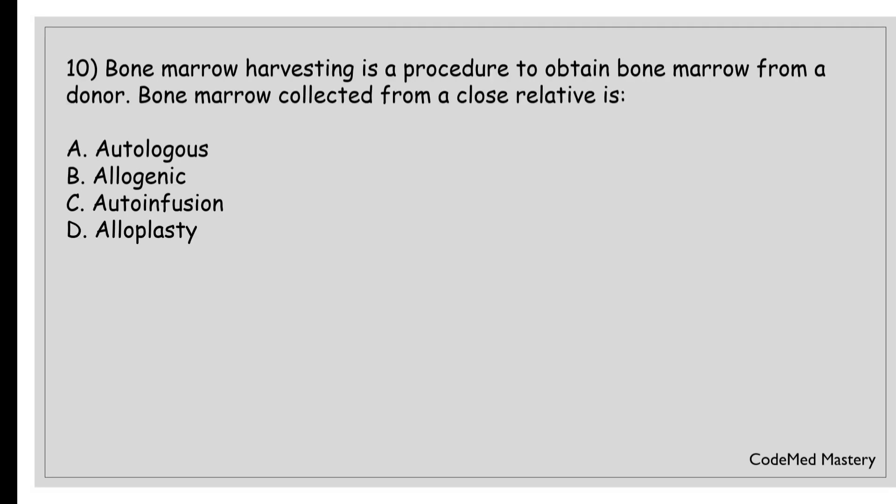Next question: bone marrow harvesting is a procedure to obtain bone marrow from a donor. Bone marrow collected from a close relative is: option A, autologous; option B, allogenic; option C, auto infusion; option D, alloplasty. The correct answer is option B, allogenic. Allogenic bone marrow transplantation involves collecting bone marrow from a donor who is a genetically close match to the recipient, often a close relative. Don't get confused with option A, autologous, because autologous transplantation is when the patient's own bone marrow is harvested and used.